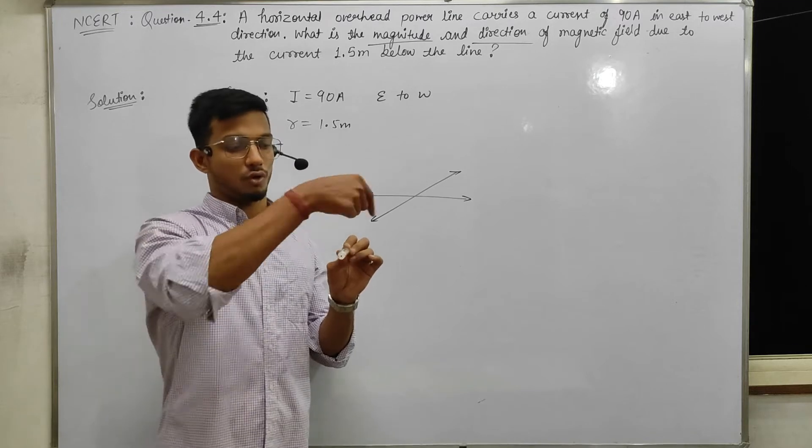10 to power minus 7, current is 90 ampere. Now we have to simplify: 90 divided by 1.5. Cut 3 from 3, we get 30. Then 30 divided by 5 gives 6. Then 60, 120.